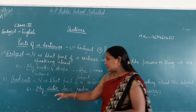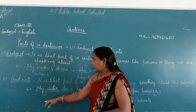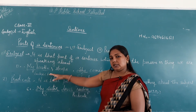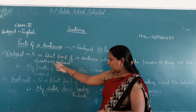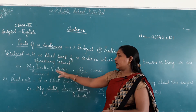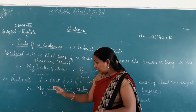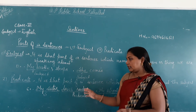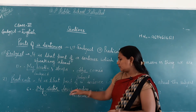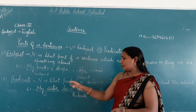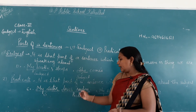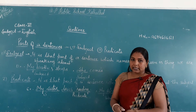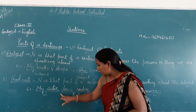Example: 'My sister loves reading.' तो यहाँ हमें identify करना है कि subject कौन है। My sister — यह हमारा subject है। और 'loves reading' — यह हमारा predicate है, क्योंकि यह हमें subject के बारे में description दे रहा है कि my sister क्या करती है — loves reading करती है। तो यह हमारा predicate होगा।